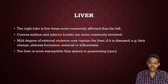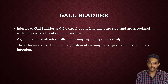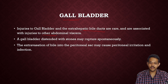The liver is more susceptible than the spleen to penetrating injuries since it is a larger organ. Injuries to the gallbladder and extrahepatic bile ducts are very rare and are associated with injuries to other abdominal viscera. A gallbladder distended with stones may rupture spontaneously. Extravasation of bile into the peritoneal cavity may cause peritoneal irritation and infection.